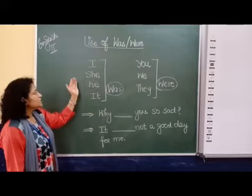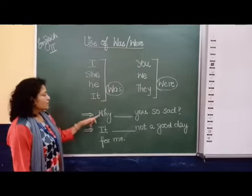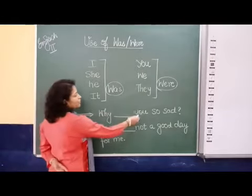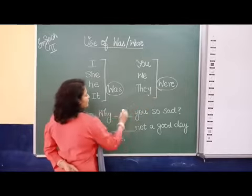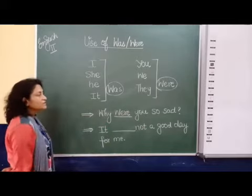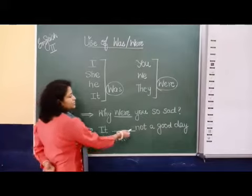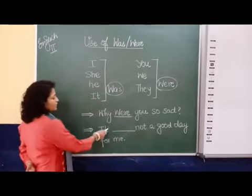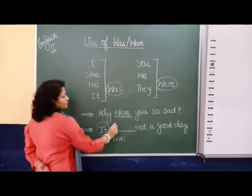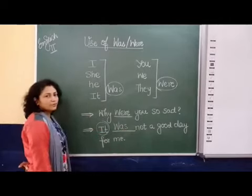For I, she, he, it, we use 'was'. Let us see one example: 'Why were you so sad?' — here 'you' is used so we use 'were'. The answer: 'It was not a good day for me.' — here 'it' is singular, so we use 'was'.